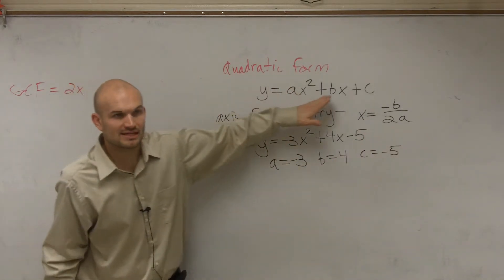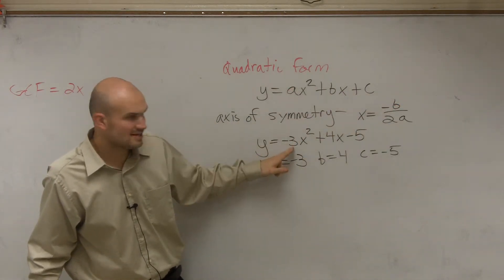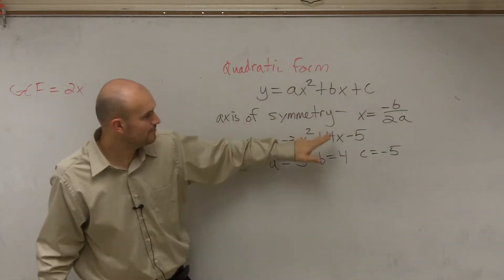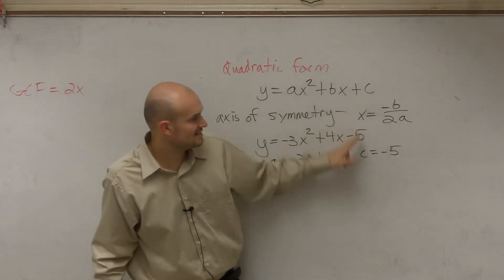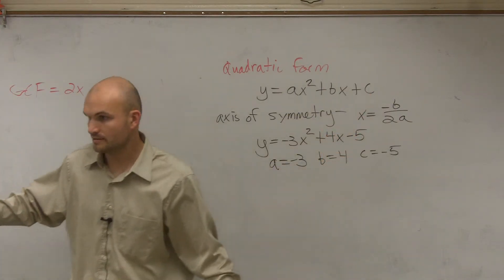By following this format, you can say that a is the coefficient of x squared, b is the coefficient of x, and c is your constant. Everybody cool with that? What I did? OK.